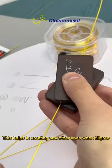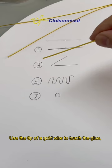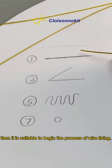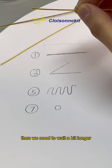For wire filigree, we will need tweezers and scissors. Use the tip of a gold wire to touch the glue. If the glue does not get pulled away by the wire, then it is suitable to begin the process of wire fixing. If the glue is carried away by the gold wire, then we need to wait a bit longer.